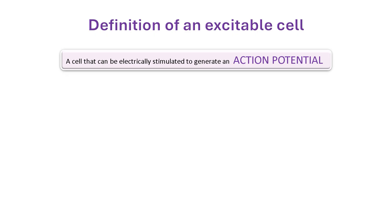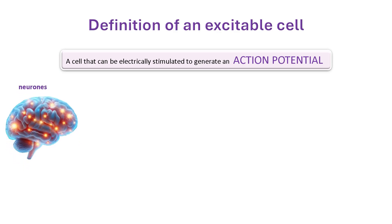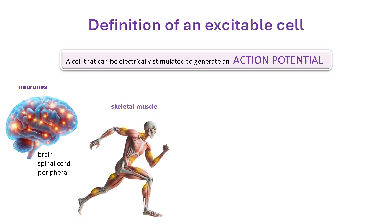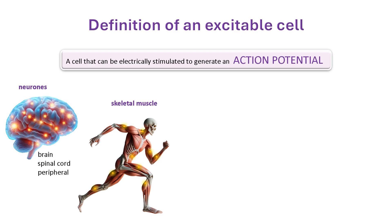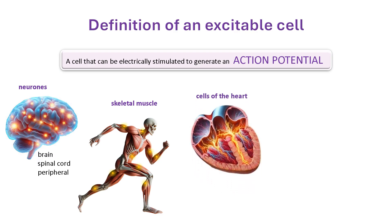There are three major cell types in the body that are excitable. They include neurons — all neurons are excitable, including in the brain, the spinal cord and peripheral nerves. Skeletal muscle cells, which contract and relax to enable movement, are excitable. Most of the cells found in the heart are also excitable. These include the muscle cells, the pacemaker cells and the conducting cells, which communicate signals from the pacemakers to the muscle.